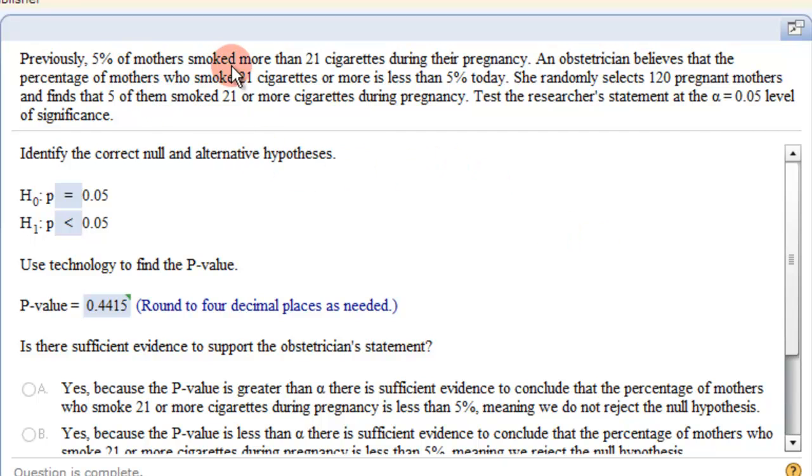Previously, 5% of mothers smoked more than 21 cigarettes during their pregnancy. An obstetrician believes that the percentage of mothers who smoke 21 cigarettes or more is less than 5% today. She randomly selects 120 pregnant mothers and finds that 5 of them smoked 21 or more cigarettes during pregnancy. Test the researcher's statement at the level of 0.05 of significance.